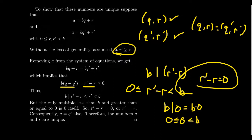We were able to prove the division algorithm using the well-ordering principle, and this is a classic way of how you use the well-ordering principle to prove various facts about integers and natural numbers. We will use this proof technique in future videos as well. But despite being able to prove the division algorithm — that these numbers exist — this proof does not provide any clues on what those numbers Q and R actually are. This is an example of what we call a non-constructive proof.